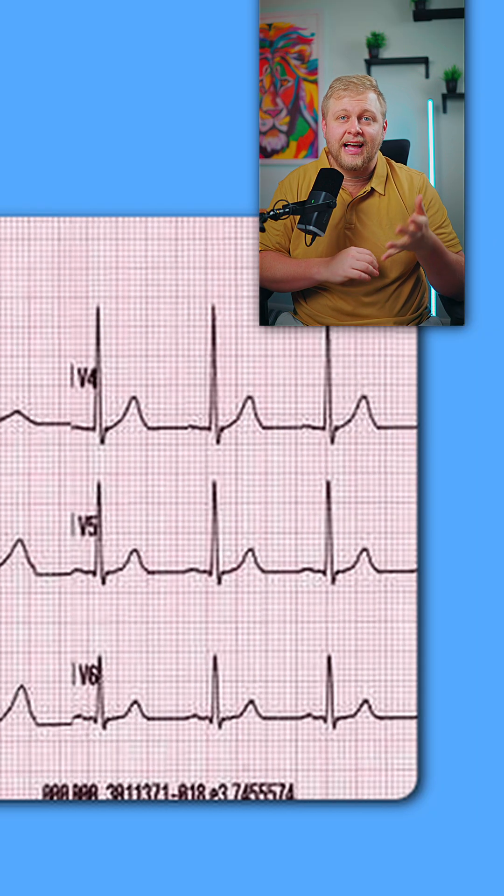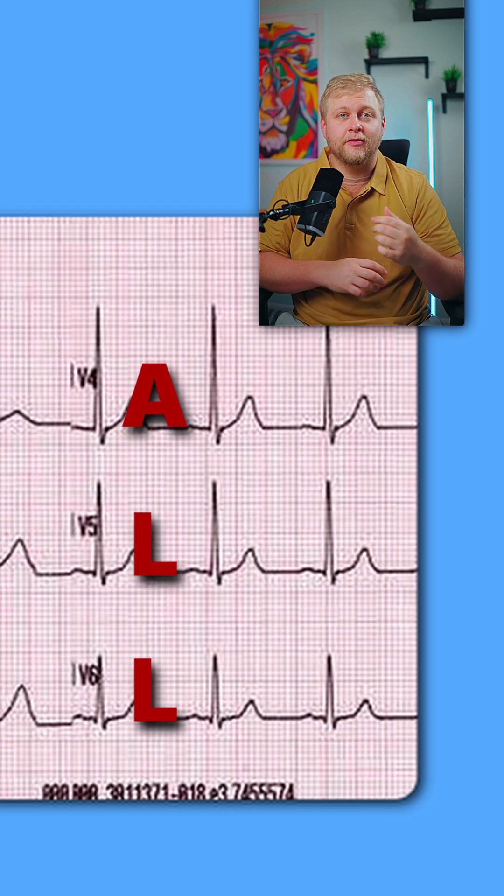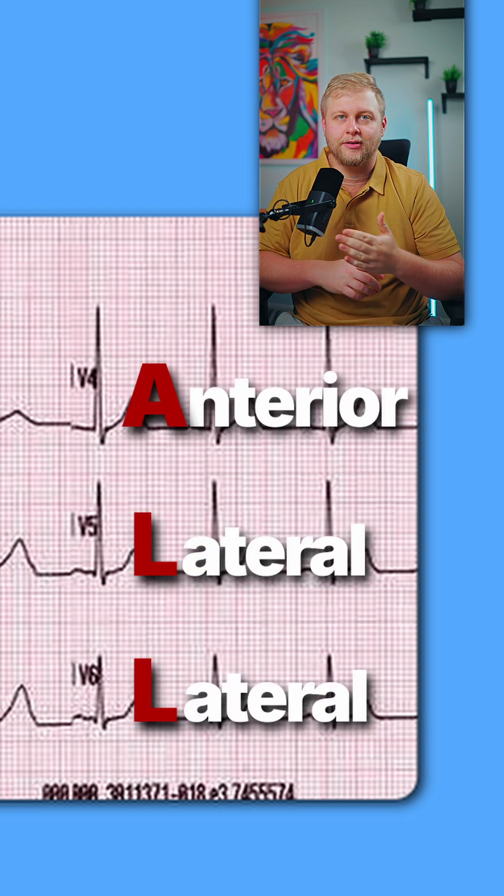And then the last column, all we're going to write is ALL for anterior, lateral, lateral. This is the easiest way to remember which lead shows you which area of the heart. And now that you know that, you'll be saying, hey, look at this inferior MI — in like no time.